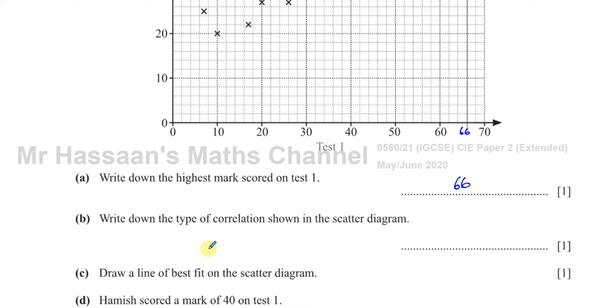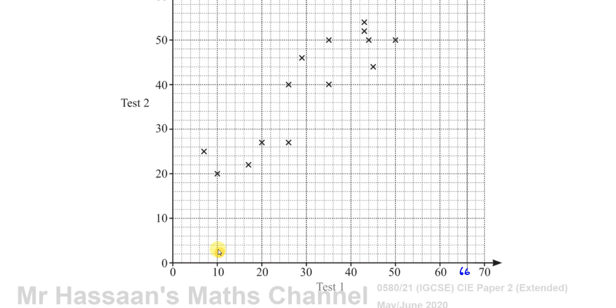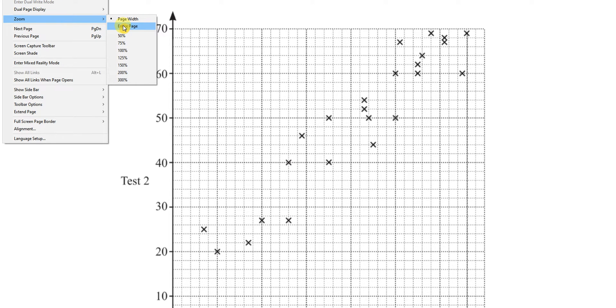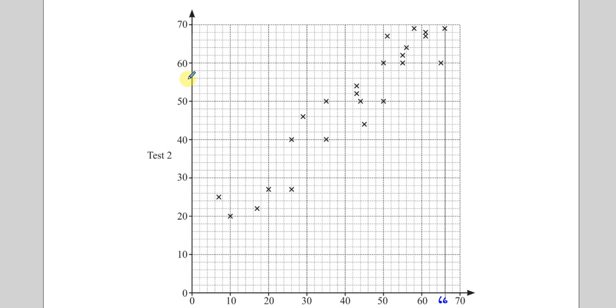Then part B says write down the type of correlation shown in the scatter diagram. A scatter diagram is a diagram where you have two sets of information about the same, like in this case, the same students. This student got this mark in test 1, this mark in test 2. So we're comparing two different things about those same people.